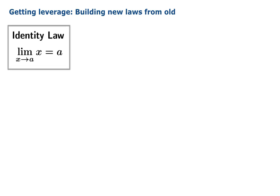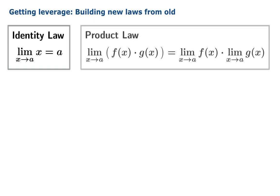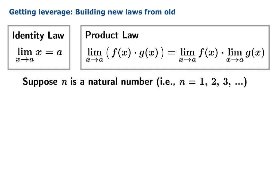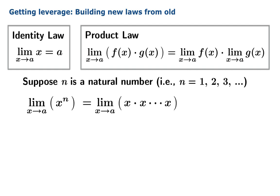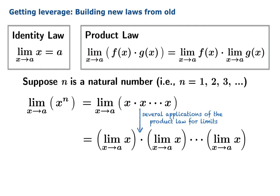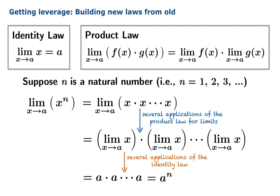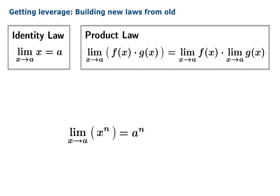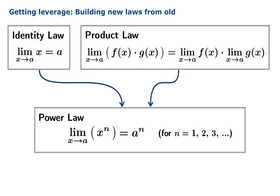For example, we know the identity law holds for limits, as well as the product law. Suppose n is a natural number — in other words a positive integer, 1, 2, 3, or so on. What is the limit as x approaches a of x to the n? We simply observe that x to the n is the product of x with itself n times, so we can apply the product law that many times. Each of those limits can be evaluated using the identity law, and the result is that the limit of x to the n is simply a to the n. The punchline is that we have a new law — we could call it the power law — which is really a simple combination of the identity law and the product law working together.